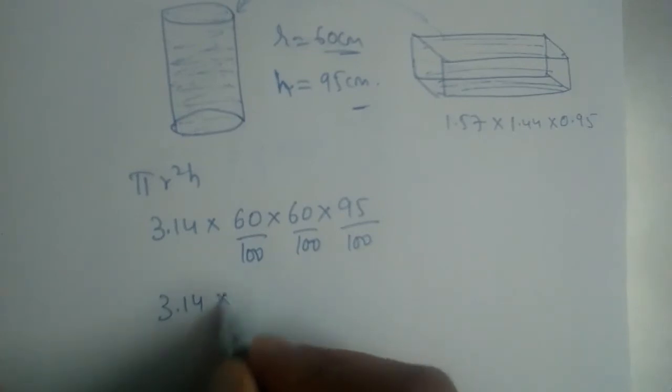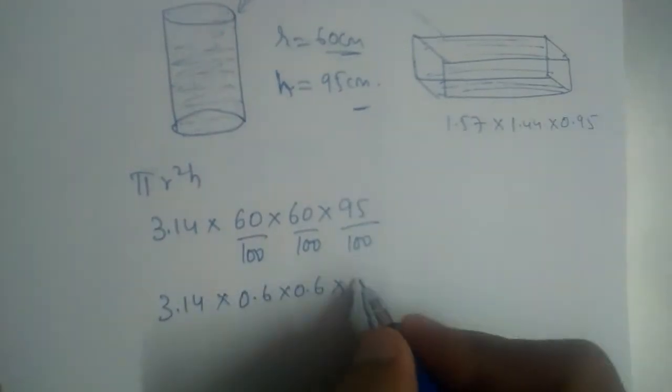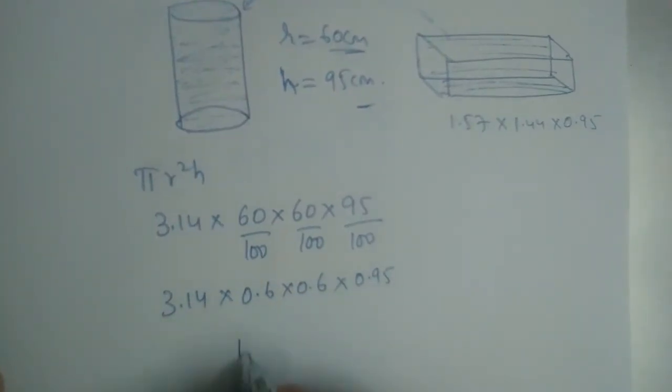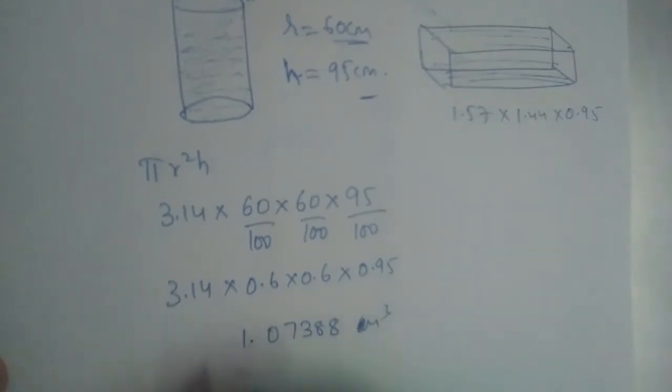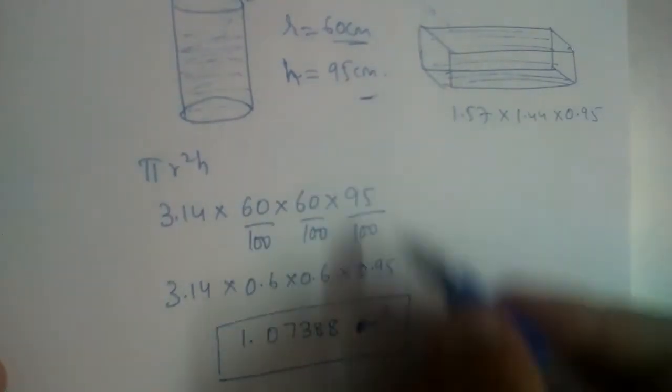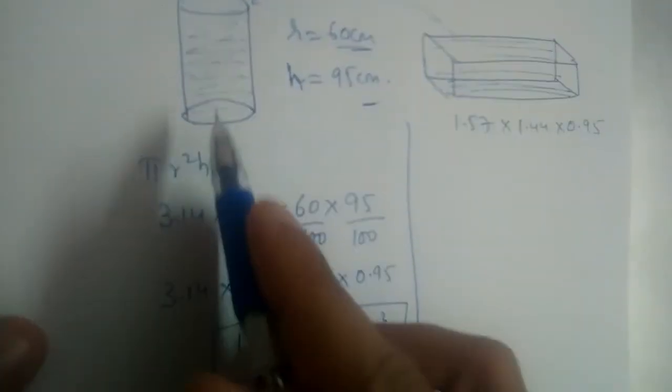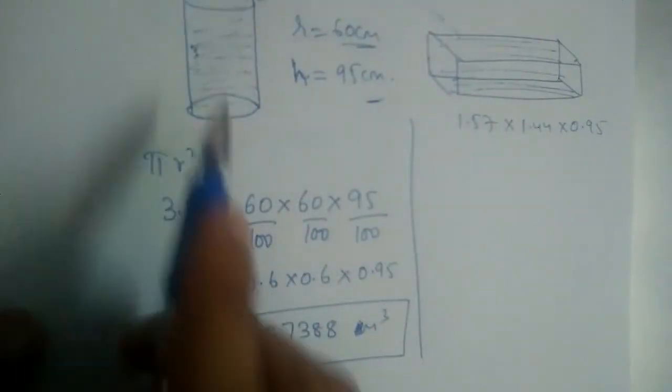So, this is 3.14, this is 0.6, 0.6 into 0.95. So, if you multiply this everything, you will have 1.07388 meter cubes. Everything is in meters now. This is the volume of this cylinder or water tank.